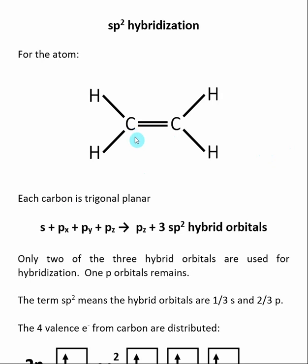If we look at VSEPR, each one of these carbons has got three electron groups around it, so each carbon is trigonal planar.